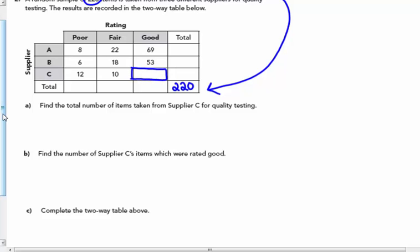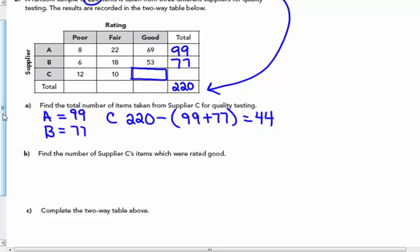First I'm going to find supplier A, which is the 8 plus 22 plus 69, which adds to 99. I'll put that in the total column. Supplier B would equal 6 and 18 and 53, which is 77. Put that in the total column. Now to find C, if I take 220 and subtract the sum of 99 and 77 from it, that's 176. 220 minus 176 would give me 44. So from supplier C, there were a total of 44 items taken.